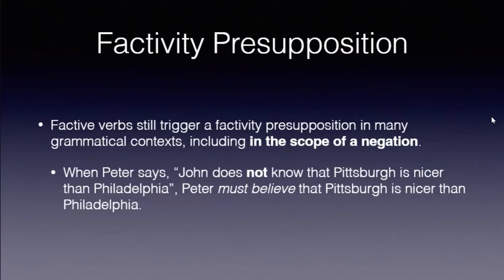An interesting fact about factive verbs — known in semantics for 40 years — is that the factivity presupposition is still triggered when the verb is embedded under negation. So if Peter says 'John does not know that Pittsburgh is nicer than Philadelphia,' Peter must still believe that Pittsburgh is nicer than Philadelphia, despite 'know' being under negation.